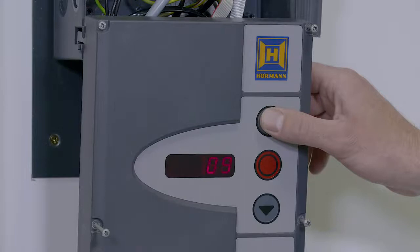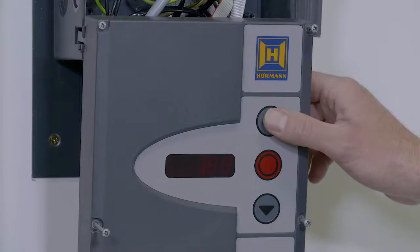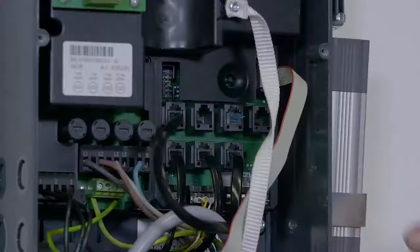We then go up to program 11. Press the stop and set the flashing zero zero to zero three. Press the stop and come out of programming.